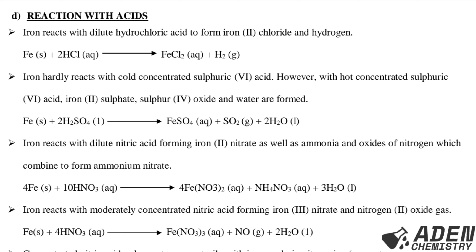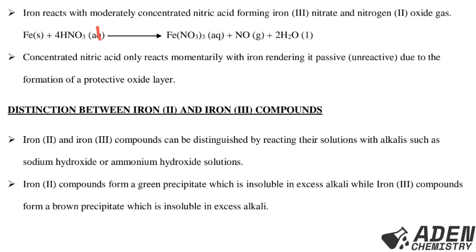Iron reacts with moderately concentrated nitric acid forming iron(III) nitrate, nitrogen dioxide gas, and water. The equation is: Fe(s) + 4HNO3(conc) → Fe(NO3)3(aq) + NO2(g) + 2H2O(l).